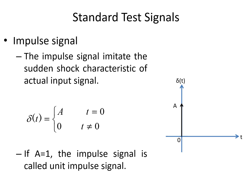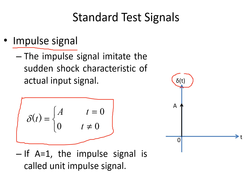Let us take up these standard signals one by one. The first standard signal is the impulse signal. This is a signal which can take any constant value only at time t equal to 0, and it is equal to 0 for any other instant of time. Here delta(t) is the symbolic representation of the impulse signal. Delta(t) is taken as equal to A for t equal to 0 — that is the amplitude — and it is 0 for t not equal to 0. If the amplitude A is taken as 1, then the signal is known as the unit impulse signal.